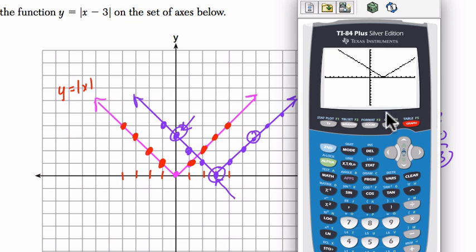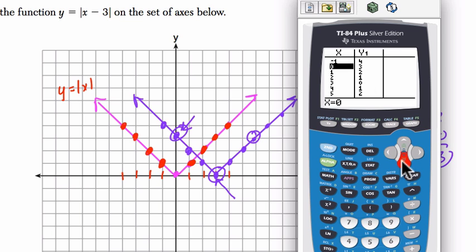Now when I go to graph, I can see the function. Now if I hit trace, I can see the points on the graph. This is not always the most helpful because you have all these decimals here. So what I could do is hit second graph. And second graph gives me a table of all the points that make the function we're trying to graph. So you can use that to quickly graph this function here.